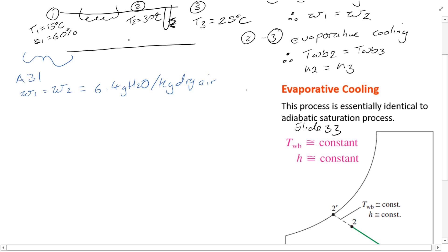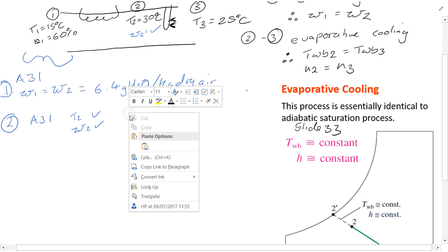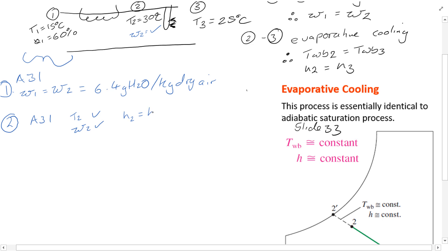We've got two values at point 2, so then we can calculate. Looking at point 2 on figure A31, the psychrometric chart, we've got T2 and omega 2. Therefore, we can find H2, which is equal to H3 because it's an evaporating cooling process as discussed. What you'll find here is a value of 48 kJ per kg dry air.